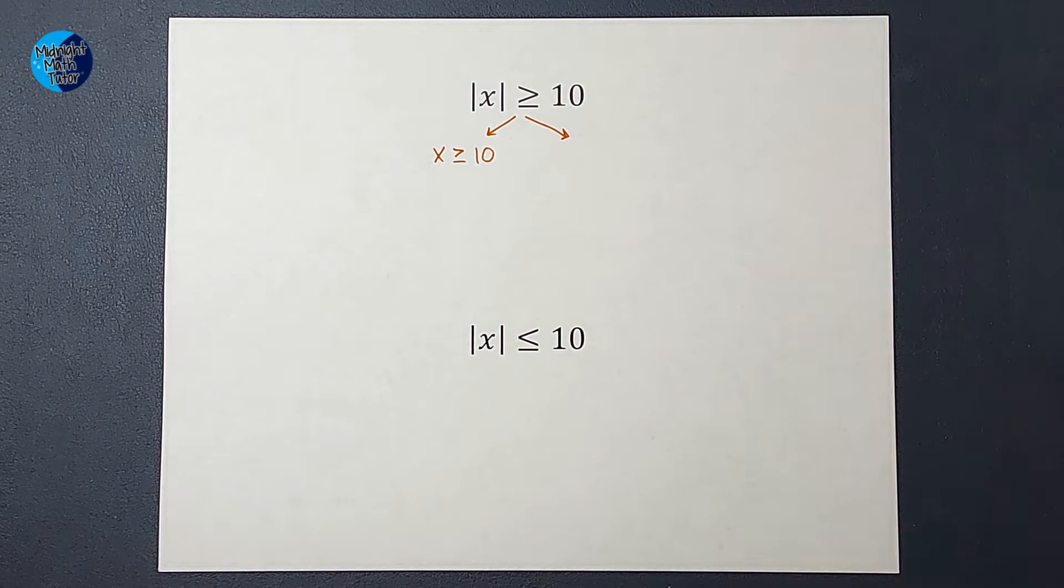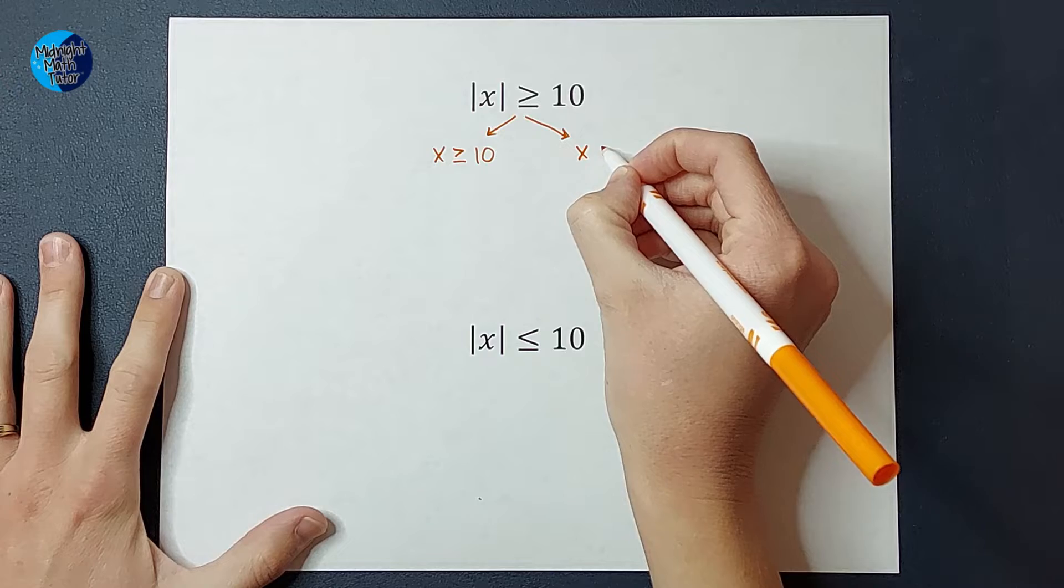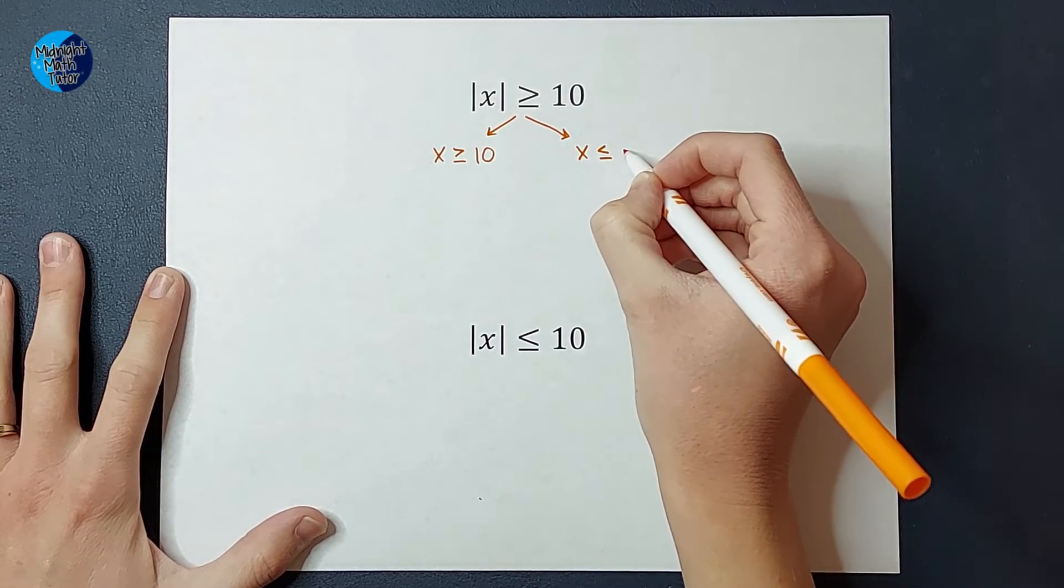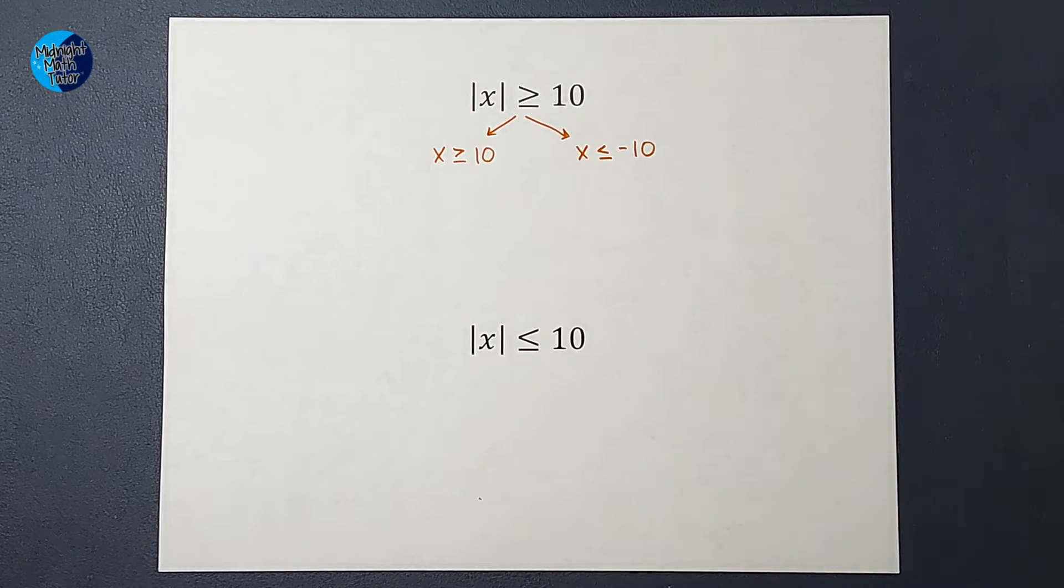Then for the other one, I drop the bars, flip the sign, and change the sign on that number. So I would have X is less than or equal to negative 10. And I could put that as my answer.